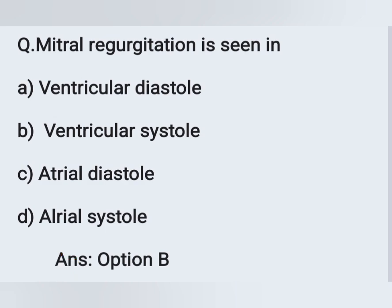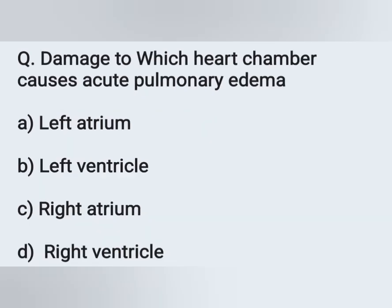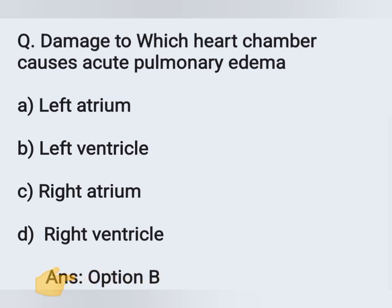Next question: damage to which heart chamber causes acute pulmonary edema? A) left atrium, B) left ventricle, C) right atrium, D) right ventricle. Damage to the left ventricle causes pulmonary edema. Option B is the correct answer.